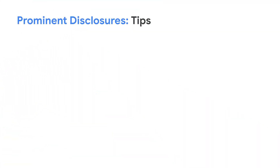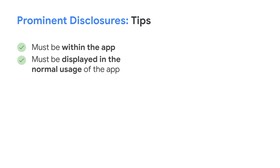And here are some helpful tips to comply with prominent disclosures in more detail. Firstly, the prominent disclosure must be within the app itself, and not only in the app description or on a website. Secondly, it must be displayed in the normal usage of the app and not require the user to navigate through a menu or settings.